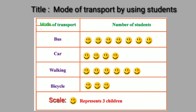Next is car. How many children used the car? Then, how many children came by walking? Eighteen children. And how many children used the bicycle? Nine children. Understood, students.